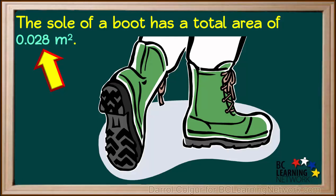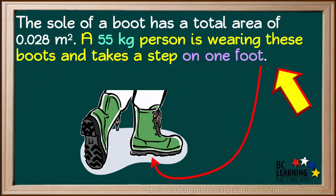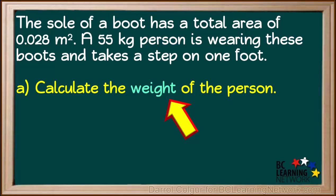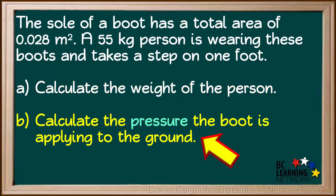Let's do an example question. The sole of a boot has a total area of 0.028 square meters. A 55 kilogram person is wearing these boots and is stepping so that all of her weight is temporarily on one foot. Part A asks us to calculate this person's weight, which is the force of gravity acting on her. Part B asks us to calculate the pressure the boot is applying to the ground as the person takes a step on one foot.